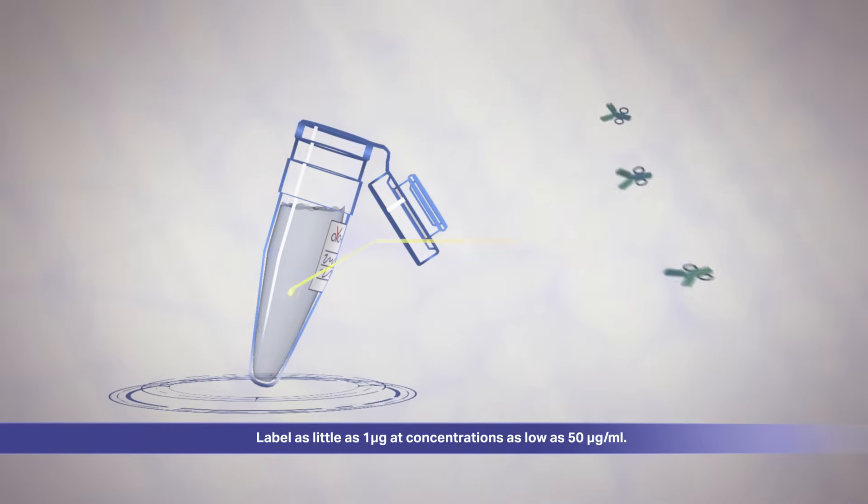As little as one microgram of your antibody can be labeled at a time, at antibody concentrations as low as 50 micrograms per milliliter.